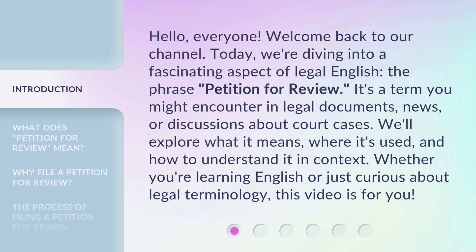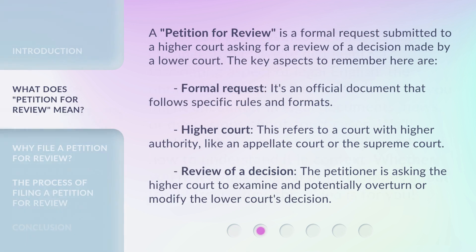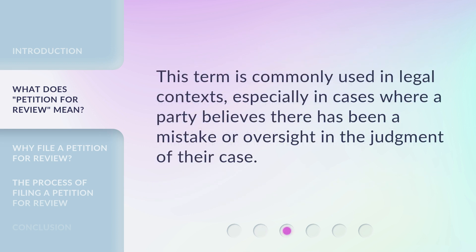A petition for review is a formal request submitted to a higher court, asking for a review of a decision made by a lower court. Key aspects to remember: it is a formal request — an official document that follows specific rules and formats. The higher court refers to a court with greater authority, like an appellate court or the Supreme Court. The petitioner is asking that court to examine and potentially overturn or modify the lower court's decision. This term is commonly used in cases where a party believes there has been a mistake or oversight in the judgment.